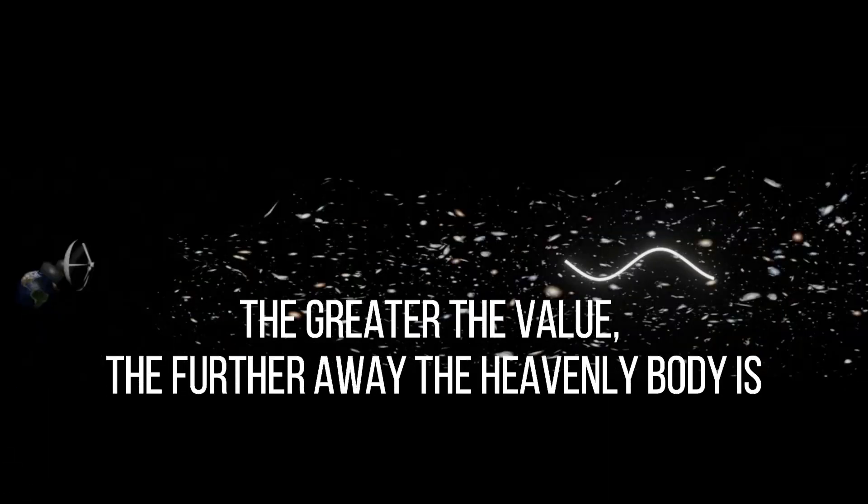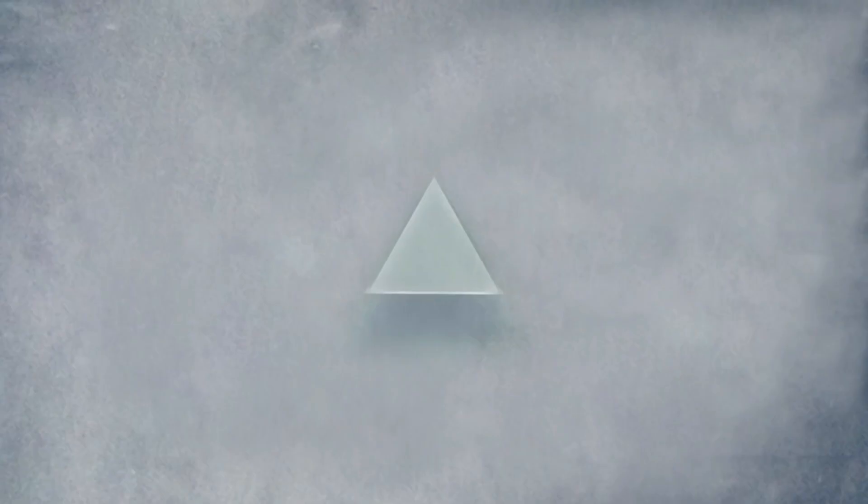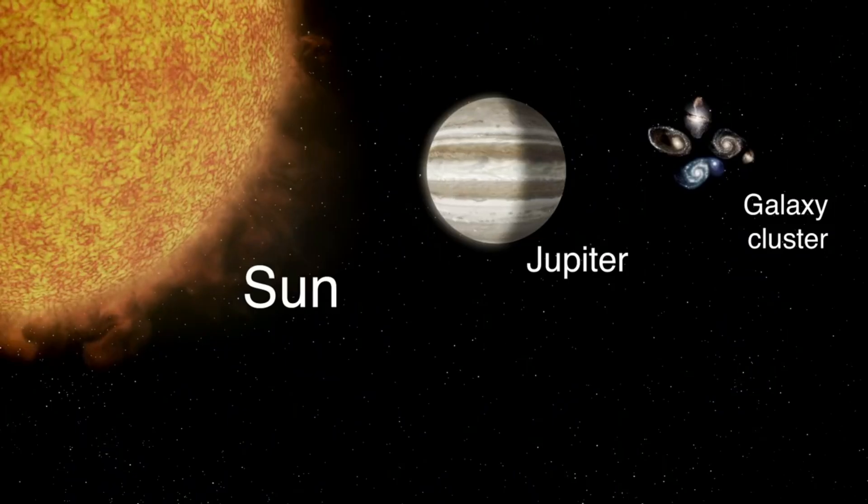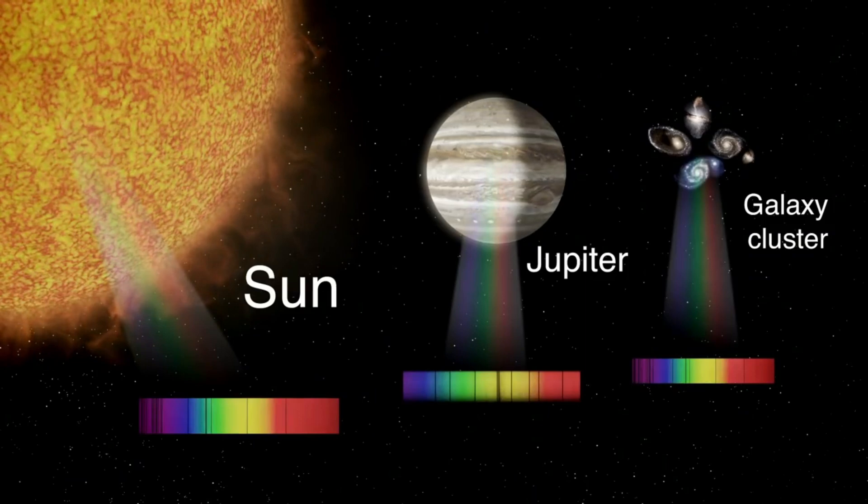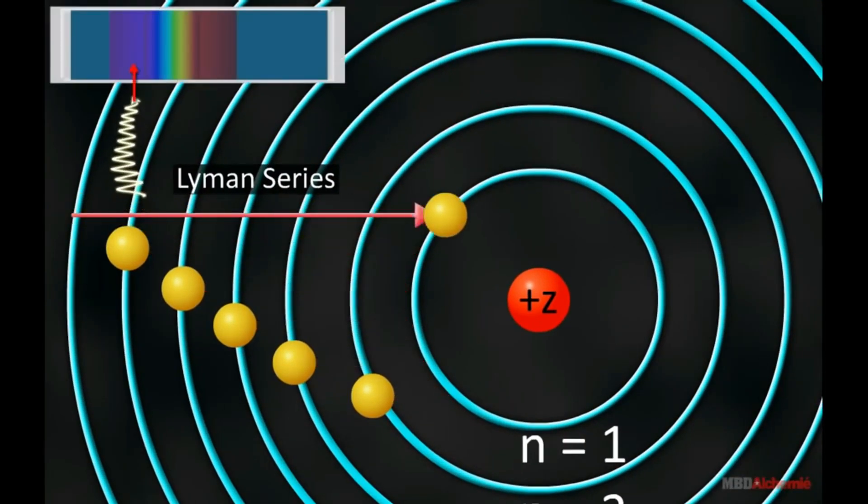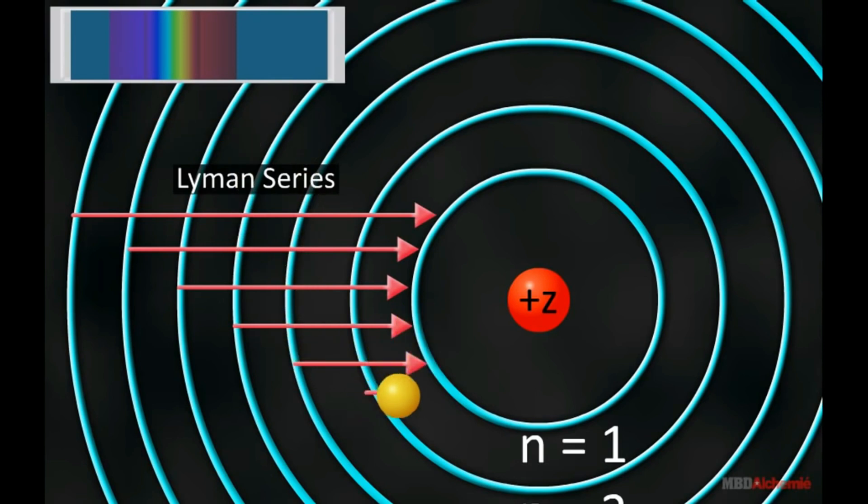The greater the value, the further away the heavenly body is. Analysis of a galaxy's light with regular colored filters enables one to determine the galaxy's redshift. This gives us the photometric redshift of the galaxy, which is an estimate since it is not very solid.